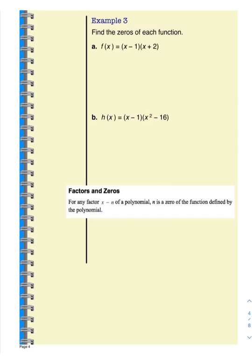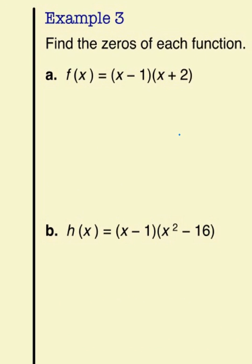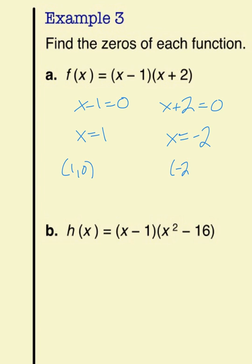Example 3 is a flashback to chapter 7. We are finding the zeros of each function. For x(x - 1)(x + 2) = 0, we use the zero product property — at least one factor must equal zero. Either x - 1 = 0, giving x = 1, or x + 2 = 0, giving x = -2. So our zeros and intercepts are (1, 0) and (-2, 0).